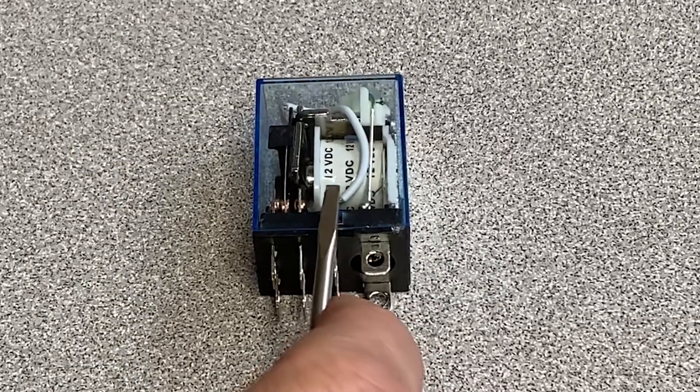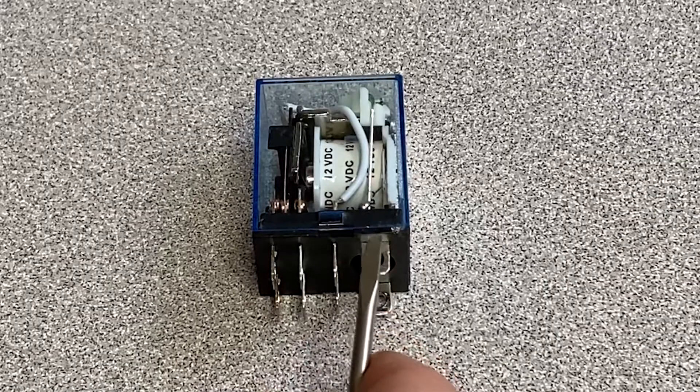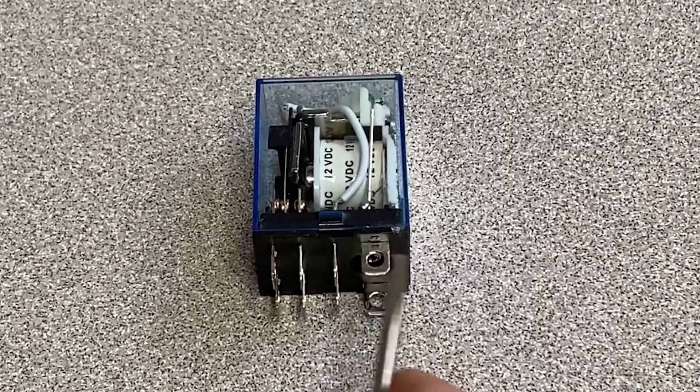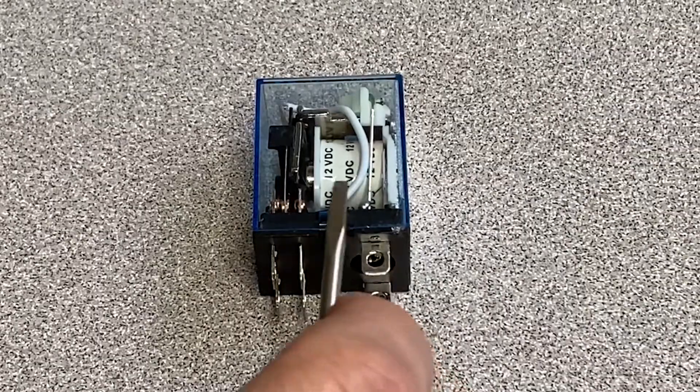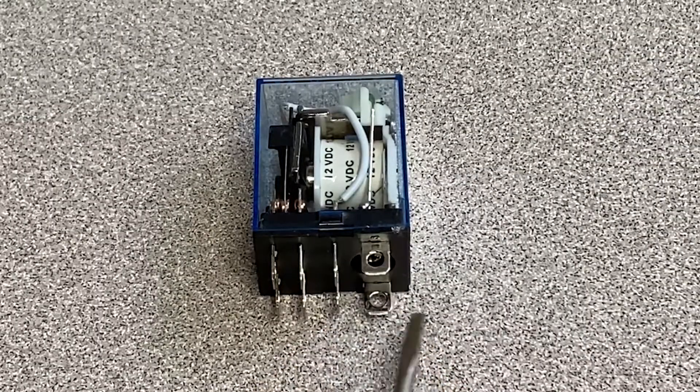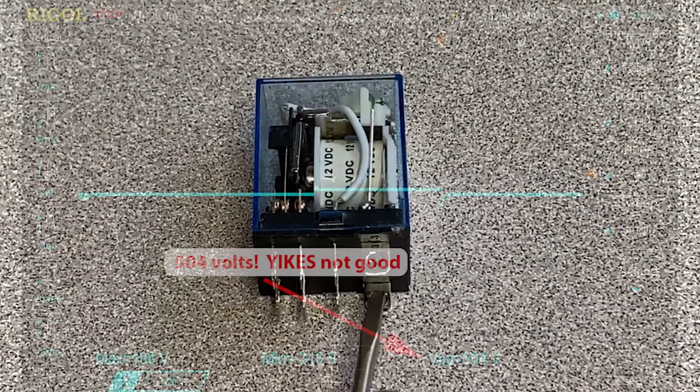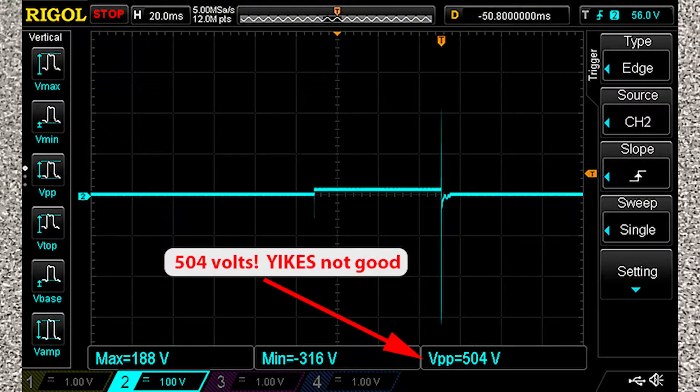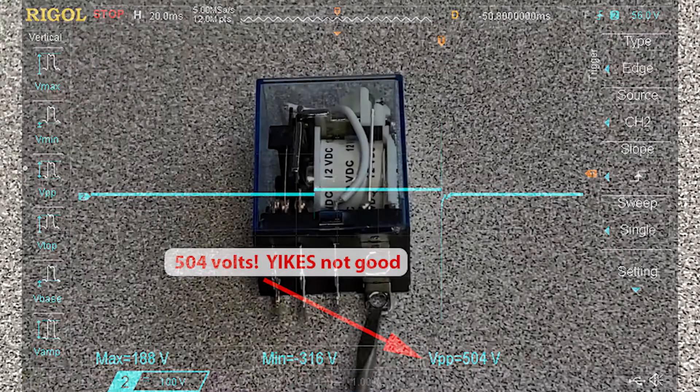You have a moving field past a wire, which is going to create electricity or induce electricity into the line. So you have to give that electricity someplace to go or else you'll end up with a spike like you're seeing on the screen. And you don't want that in your project.